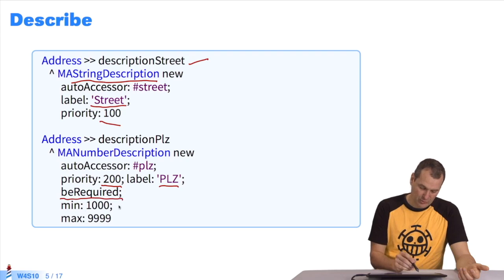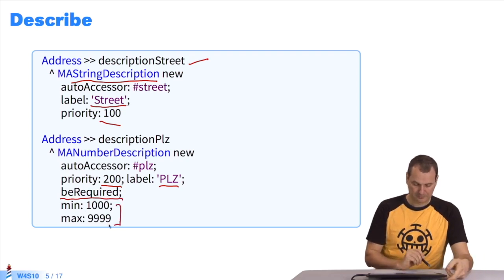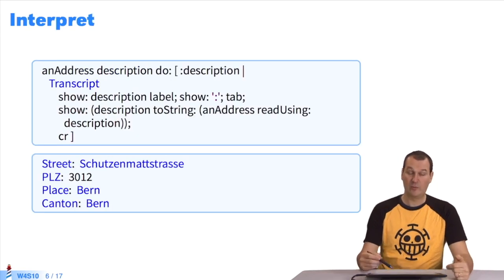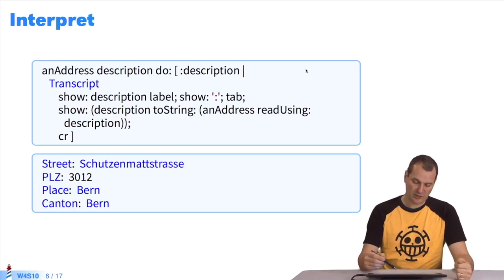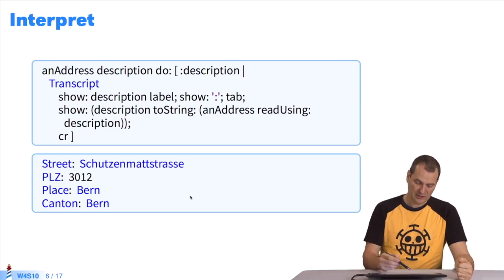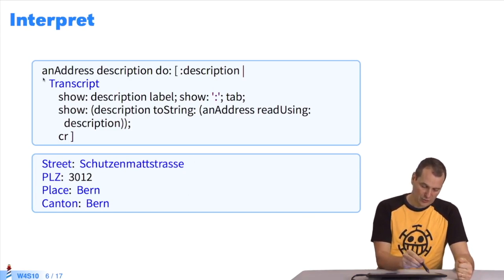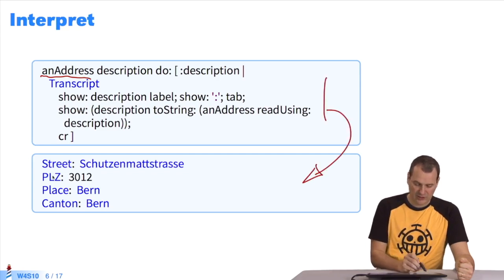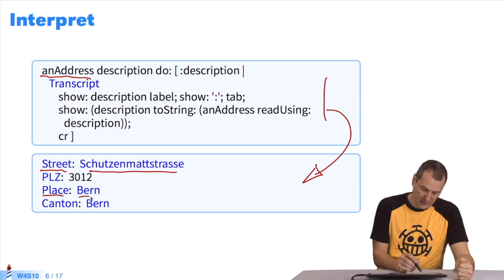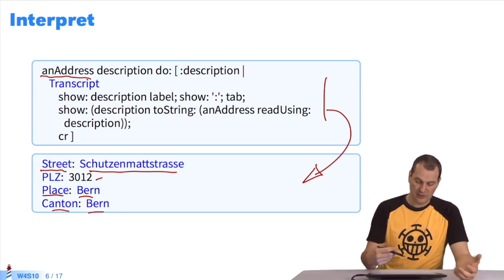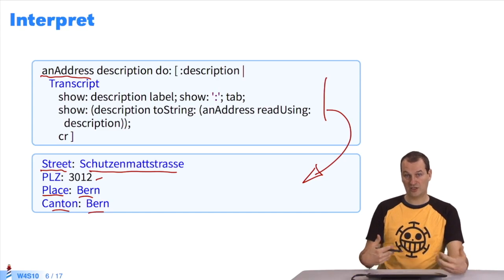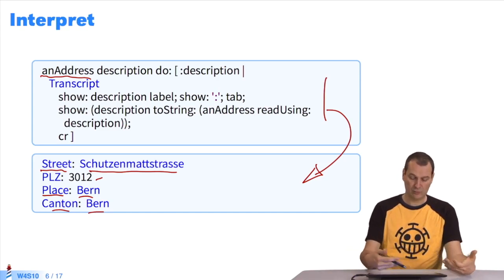I specify required and give my minimum and maximum values. The very first thing I can do with this description is write a little tiny program to interpret the address and generate reports. I take an address and run it through this program which generates a little report. The name of the street, the place Bern, and the canton Bern. Postal code 3012. I can use the fact that my data has been described to generate reports. That was the simplest kind.